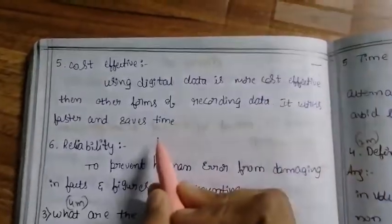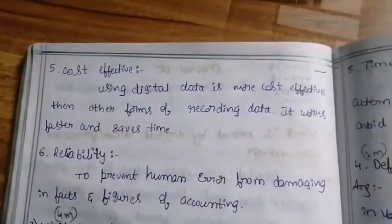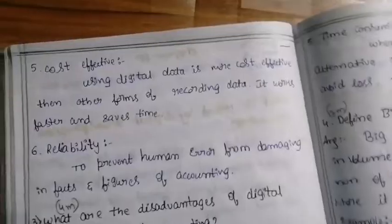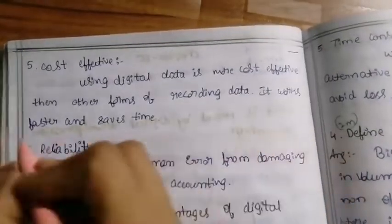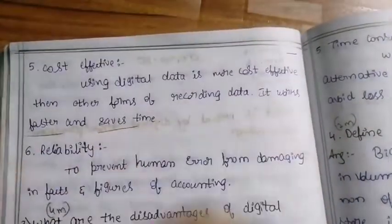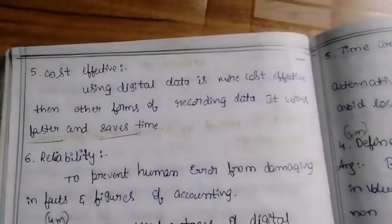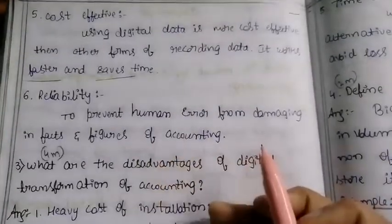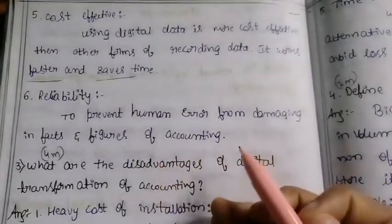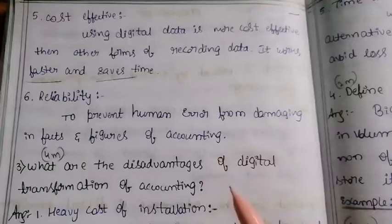Digital accounting works faster and saves time. Sixth advantage is reliability: it helps prevent human error from damaging the facts and figures of accounting.